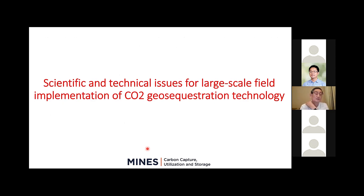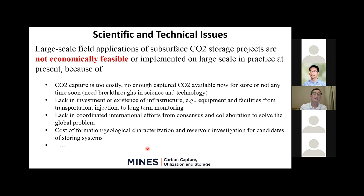下面我就讲一下，有些我们叫科学问题也好、技术问题也好、其他困难也好，为什么到目前为止这种地下埋存方法没有得到广泛的应用。这有很多问题，第一个问题就是经济上还是不行，成本太高，这影响了大规模应用。当然有些政治问题好多问题。并不是说我们埋存从石油工业技术角度有问题，而是说二氧化碳的分离技术太贵了，我们没有足够的二氧化碳气源，这是一个最主要的问题。